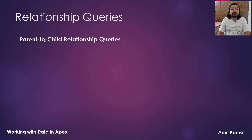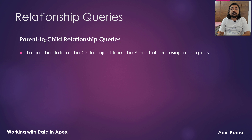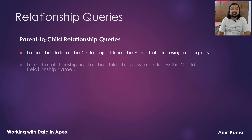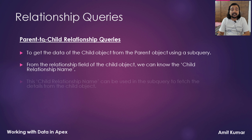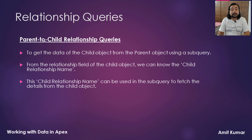Now let's talk about parent to child relationship queries. To get the data of the child object from the parent object using a sub query, from the relationship field of the child object we can know the child relationship name. This child relationship name can be used in the sub query to fetch the details from the child object.